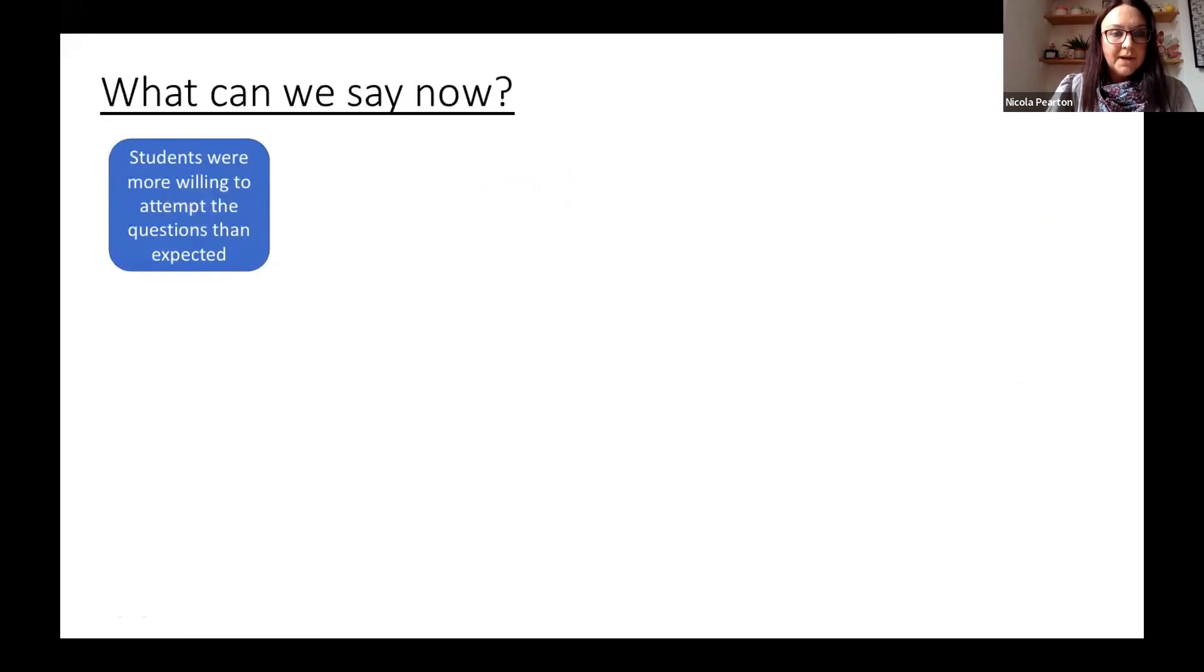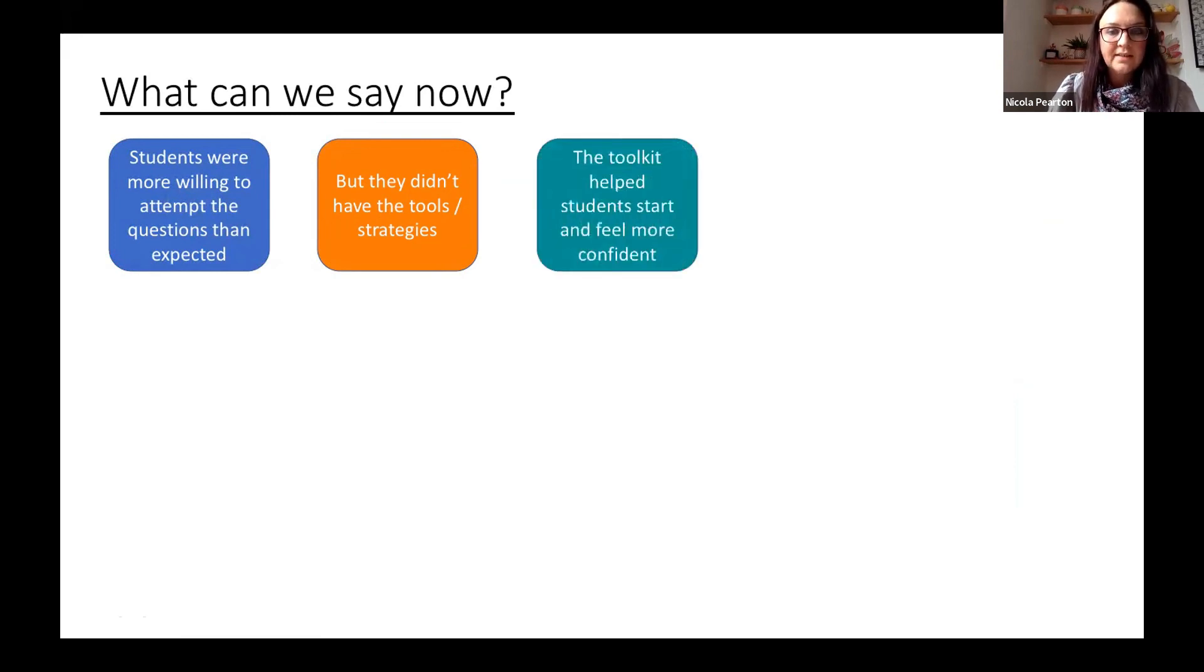What we can say now after this research is that students were much more willing to attempt the questions than we expected. There wasn't a lot of resistance to trying, which was a really positive thing. We also found that although they were interested in trying, they just didn't know where to start, and the toolkit helped to address that definitely. We found it was very positive, but we do think that we needed to use it earlier in the year and much more often. As is always the case with introducing something new, such as bar models or ratio tables or whatever, they need to get used to using it. Ideally, we would have done more—get them to try it more within the cycle.